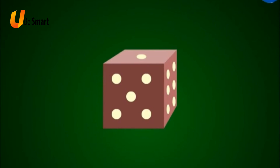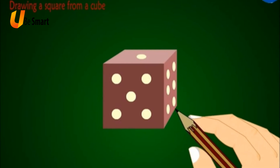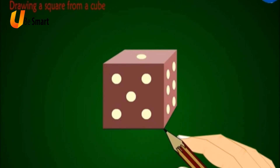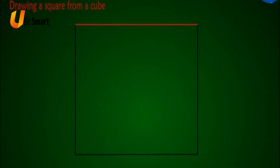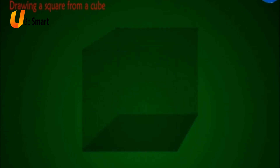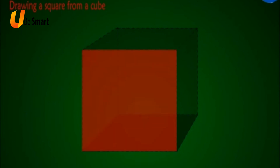Let us study how to draw two-dimensional shapes using three-dimensional objects. Drawing a square from a cube. Take a cube shaped solid, dice. Put it on a paper. Take a pencil and run along the edges of the dice. It makes a square. A square has four sides and all its four sides are equal. Since square is the basic 3D object of cube, all the faces of the cube are also equal to each other.